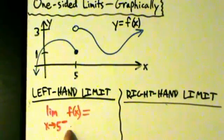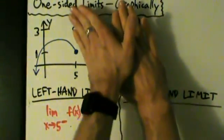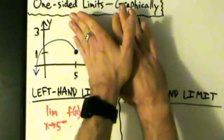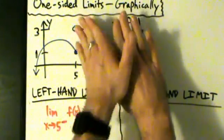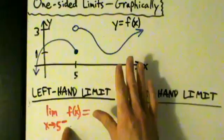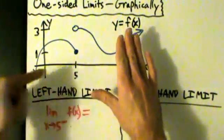So the way we figure this out is we look at the graph, we cover up the right part. Everything to the right of the 5 does not matter at all. We're doing the left-hand limit as x goes to 5. So all that matters is what's happening as we come into 5 from the left.